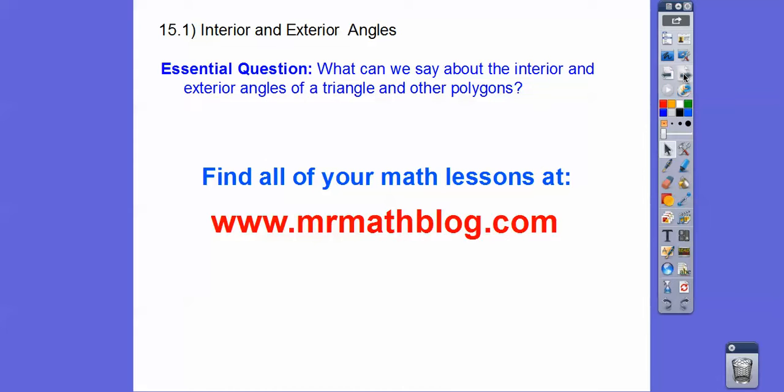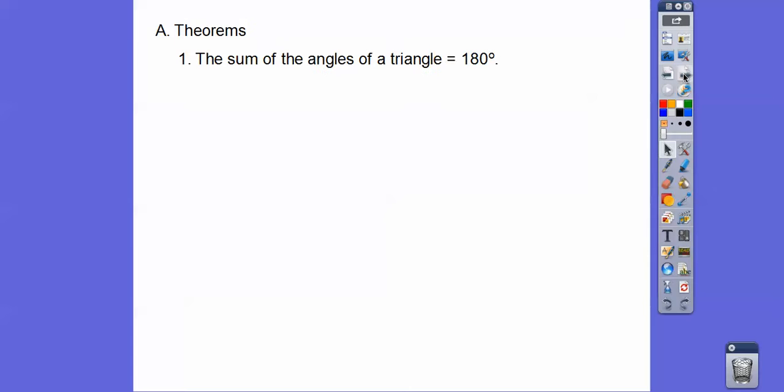So our question here is, what can we say about the interior angles and exterior angles of a triangle and other polygons? So you guys probably knew this already, and if you didn't, that's okay. The sum of the angles of a triangle, any triangle, is 180 degrees.